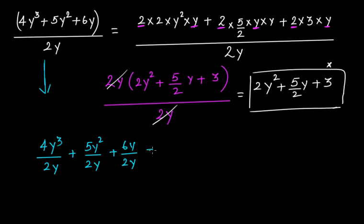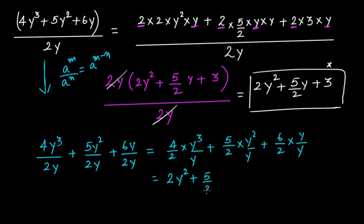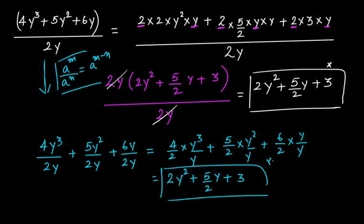Now you can apply the laws of exponents. This is (4/2) × (y³/y) + (5/2) × (y²/y) + (6/2) × (y/y). From here: 4/2 = 2, and y³ ÷ y — using a^m ÷ a^n = a^(m−n) — gives y². Then 5/2 × y, and 6/2 = 3, y/y = 1. So the answer is 2y² + 5/2·y + 3. You can clearly see these two answers are exactly the same.